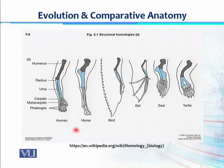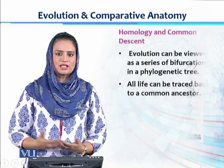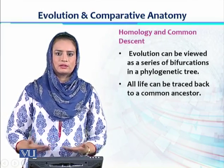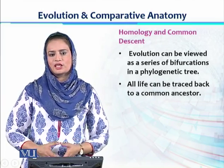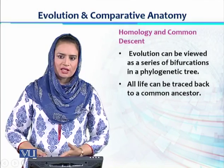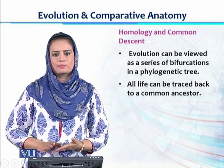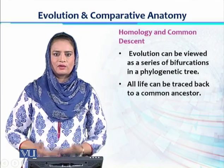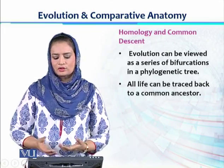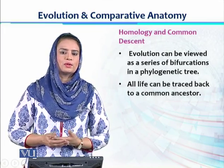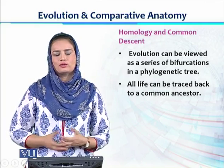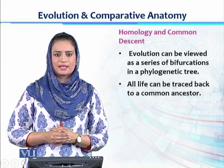Therefore, it can be said that these species which have four limbs are performing different functions, but in past times there is a possibility that there was a common ancestor. With the passage of time, changes and variations started, and they adopted different functions — for example, humans still use forelimbs for holding, but a bat uses its forelimb for flying. So homology gives us the concept of a common ancestor, but with the passage of time there were variations and evolution of different species. That is how all life can be traced back to a common ancestor, and there is a possibility that all species present on our planet might have a common ancestor.